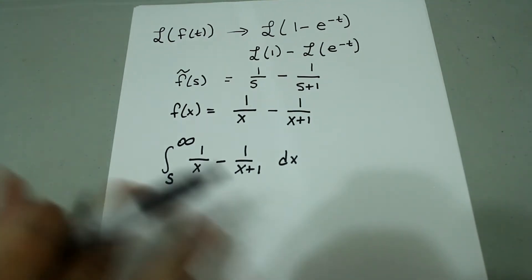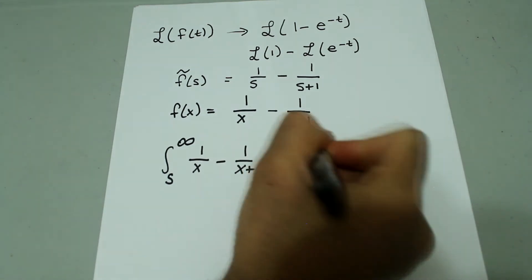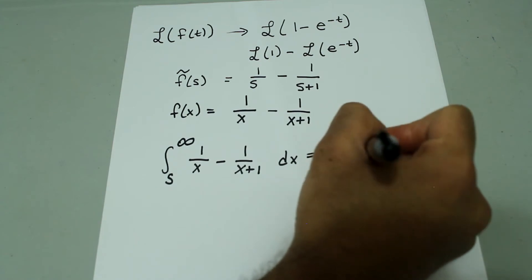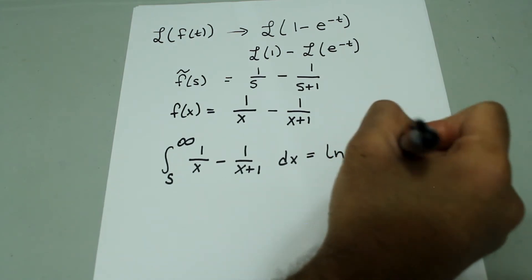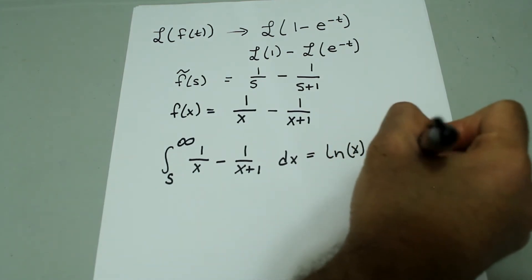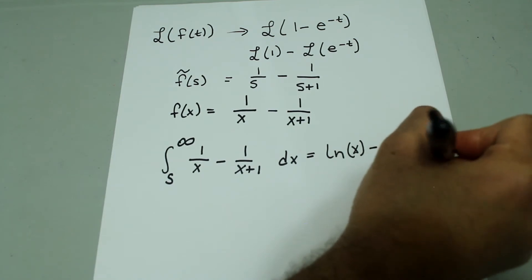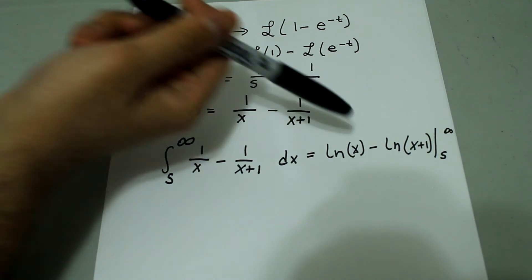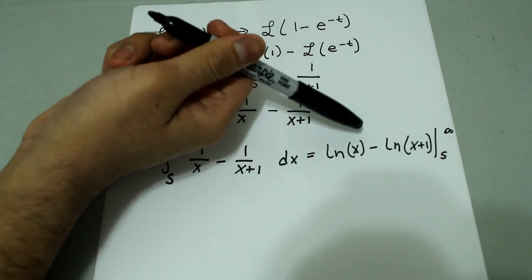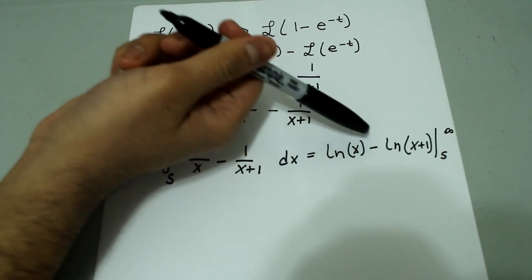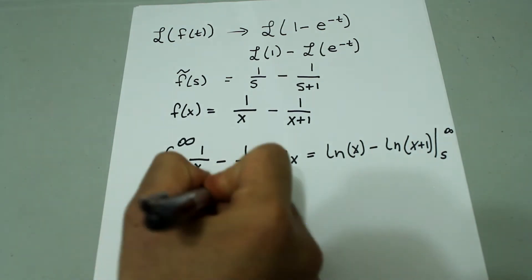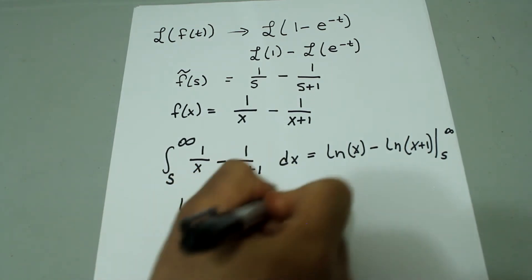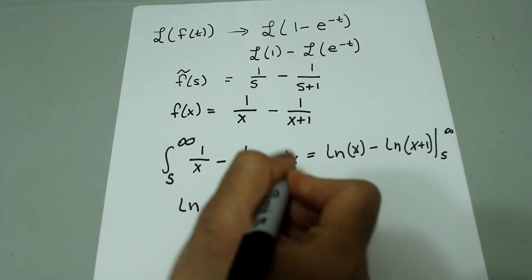So, next, we're going to go ahead and integrate this. And we get natural log of x minus natural log of x plus 1 evaluated from s to infinity. Using the property of natural log, since two natural logs are subtracted, we can write that as natural log of x over x plus 1 evaluated from s to infinity.